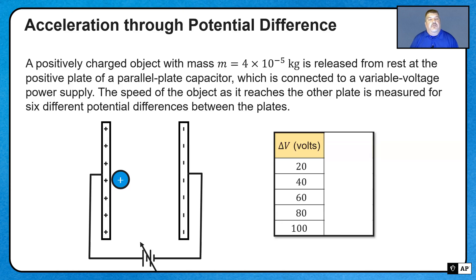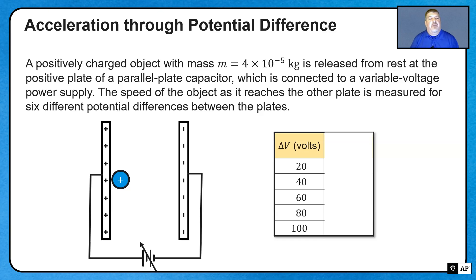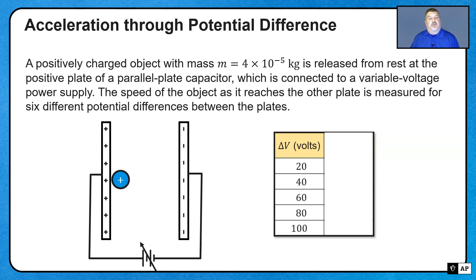In this situation, we have a positively charged object with a mass of 4 times 10 to the negative 5 kilograms that's being released from rest at the positive plate of a parallel plate capacitor. That capacitor is connected to a variable voltage power supply. The speed of the object as it reaches the other plate is measured for six different potential differences. When we create a potential difference between the two plates, charge goes on the plates and creates an electric field between them.